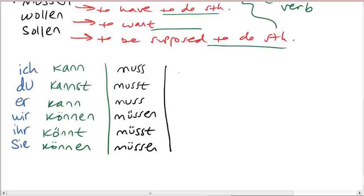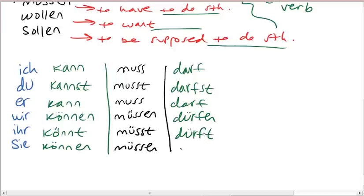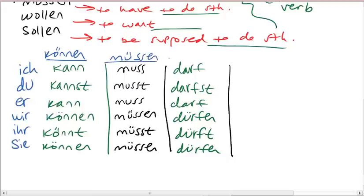Let's do dürfen. So ich darf. Du darfst. Maybe you can even fill in the rest. Er, sie, es darf. Wir dürfen. Ihr dürft. Und sie dürfen. So what's the pattern that you see thus far?